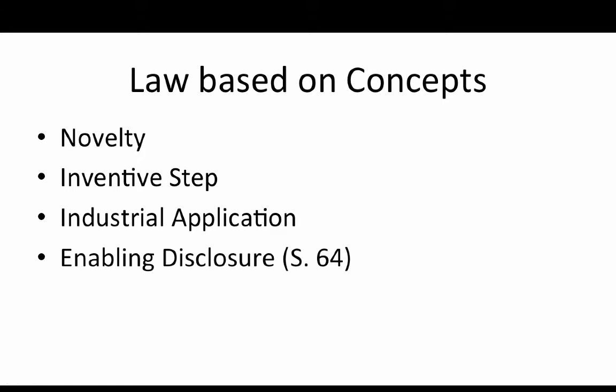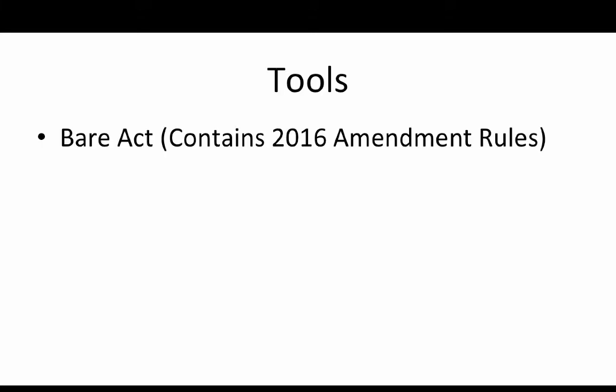To understand the act and the rules, you could preferably buy a bare act which is sold in most law book houses, or you could buy them from online bookstores. But ensure that the act and the rules contain the 2016 amendments to the rules. There is a patent amendment rules 2016 which came out in May. If you pick up a copy which does not have this amendment, you are going to have an old and outdated rule with you.